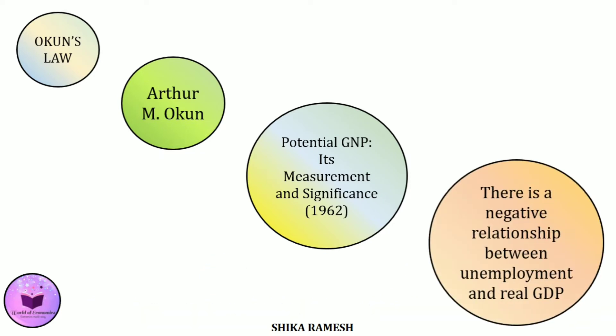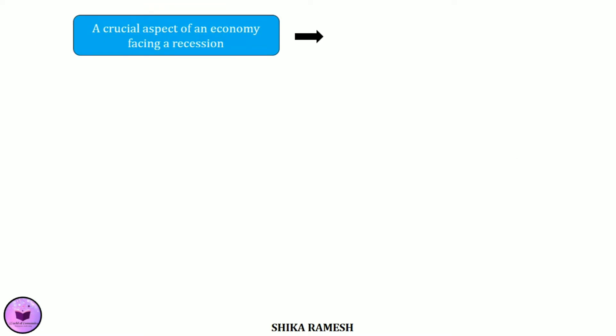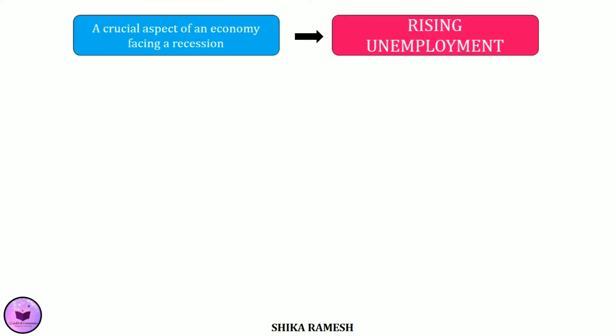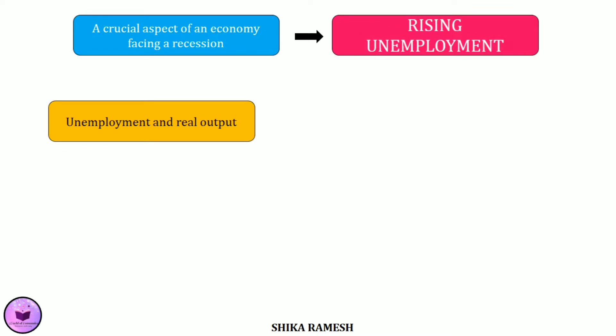Okun's Law states that there is a negative relationship between unemployment and real GDP. So let's see in detail what this law means. An important aspect of an economy facing a recession is rising unemployment. When unemployment increases, real output decreases. Here real output indicates the output adjusted for inflation.